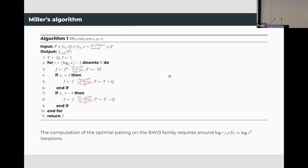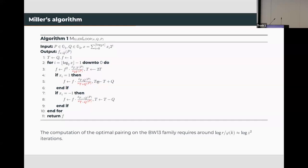This is the algorithm of Miller function evaluation. At the doubling step, we need to compute a point doubling and a squaring times a ratio of two line function evaluations. Likewise, at the addition step, we need to compute a point addition and f times a ratio of two line function evaluations. In the BW13 family, the length of the Miller loop is about twice the size of the parameter Z.